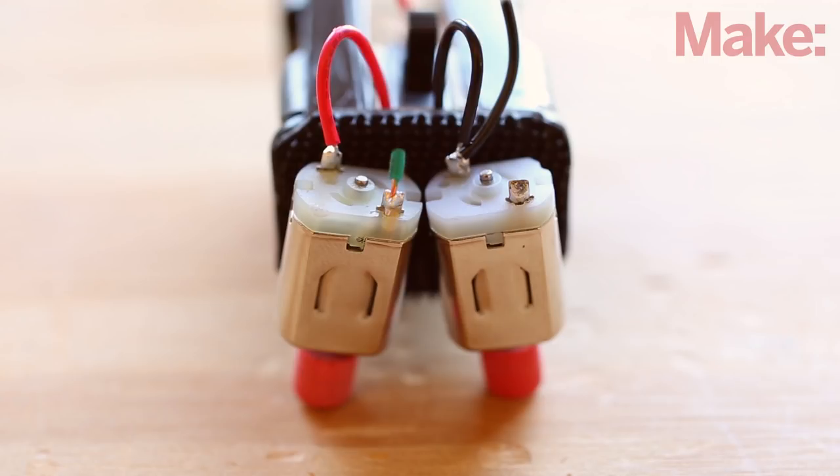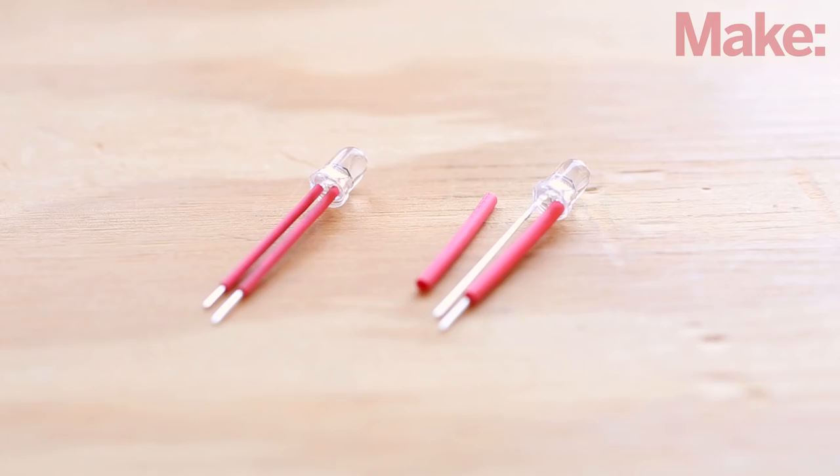Finally, attach a lead to each of the two remaining motor terminals. These will both connect to pin 5 of the integrated circuit. Next, we'll build the bot's head which will hold its eyes and brain.